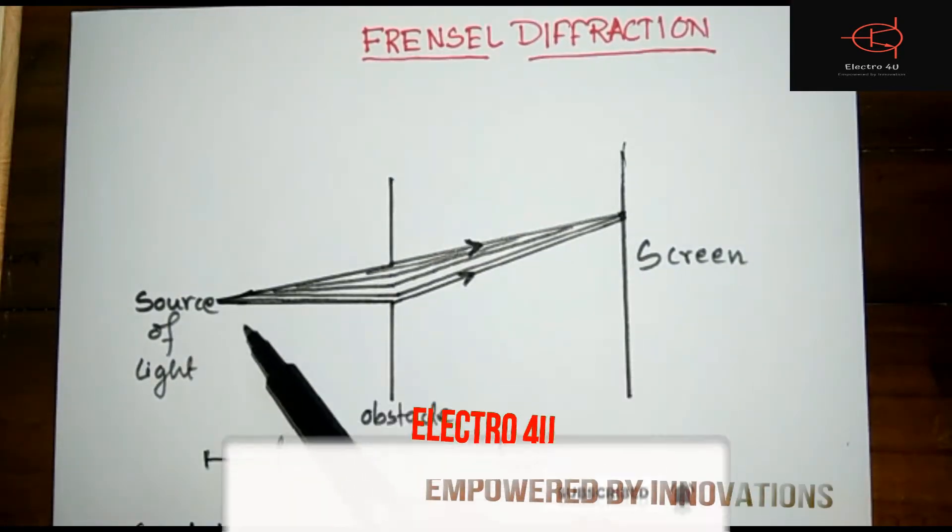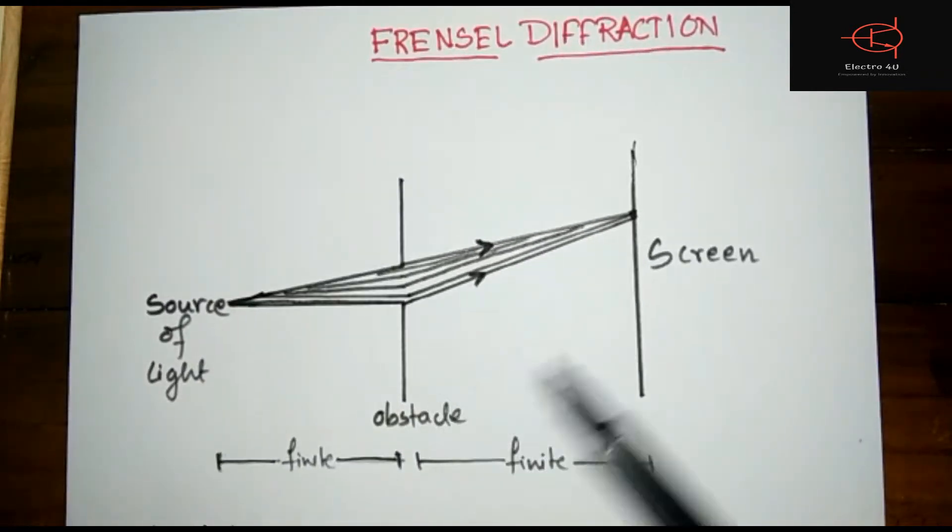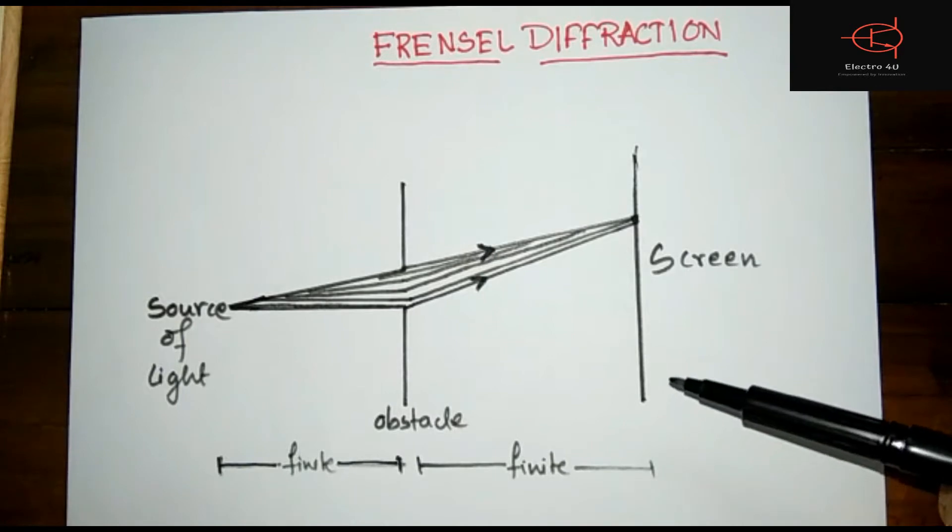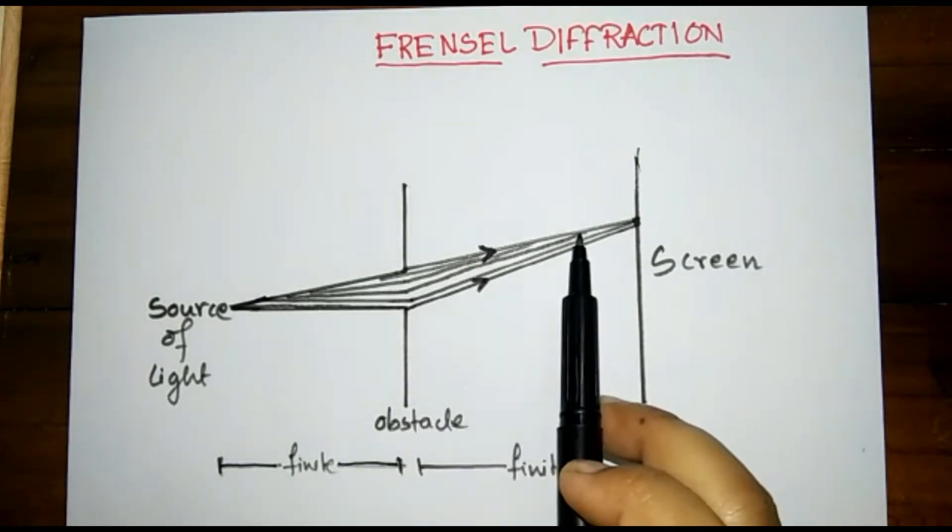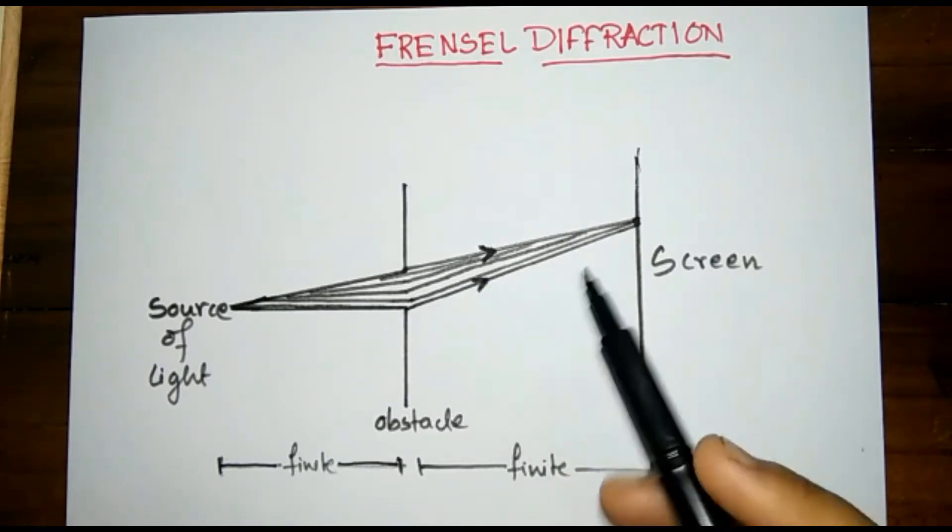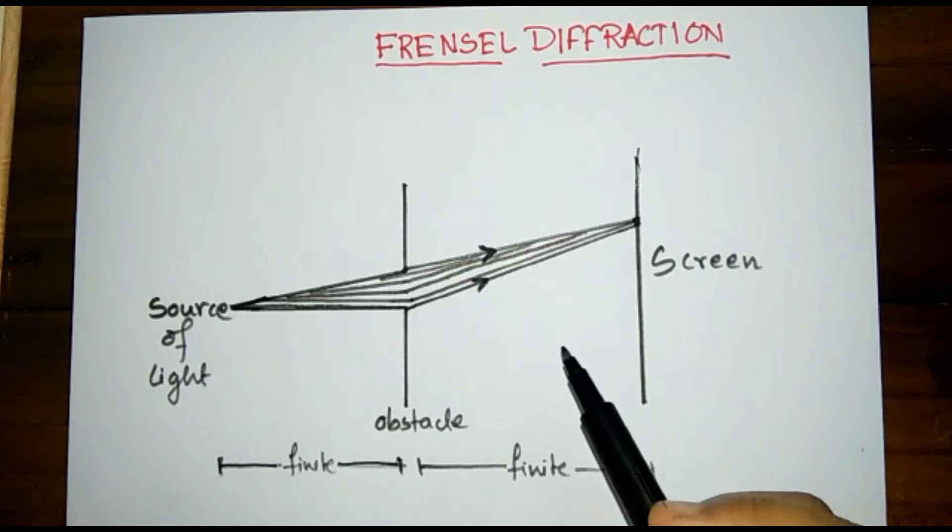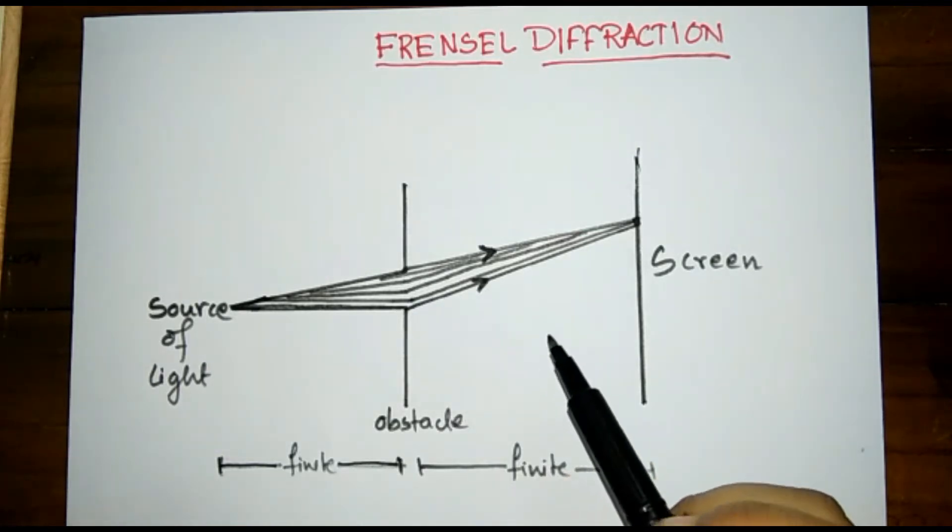Here, as you can see, we have a source of light, an obstacle, and a screen. The source of light is passing through the obstacle. As we have studied in the video on diffraction, diffraction is the bending of light through the corners of the obstacle.